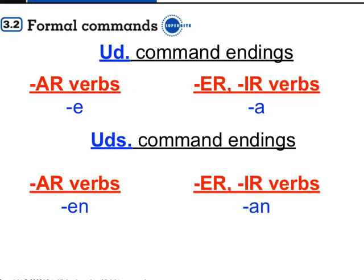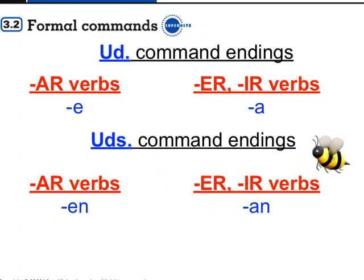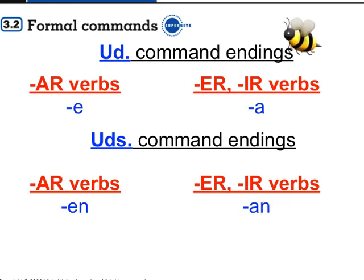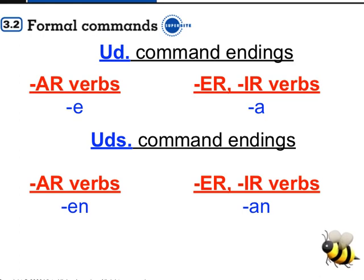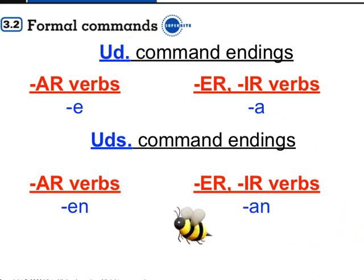You drop that vowel O and add the endings. With the usted command, which is singular, for AR verbs you flip the vowel and use E. For ER and IR verbs you also use E. For ustedes commands, which are plural, AR verbs take -EN and ER and IR verbs also take -EN.